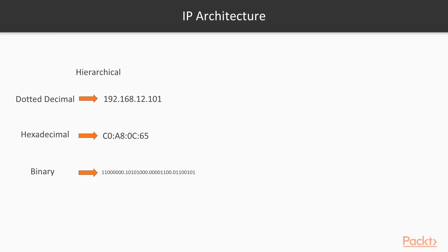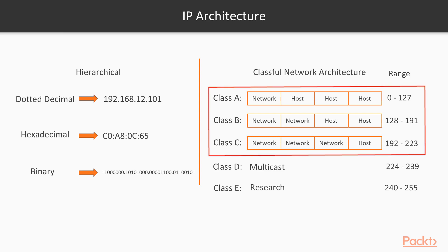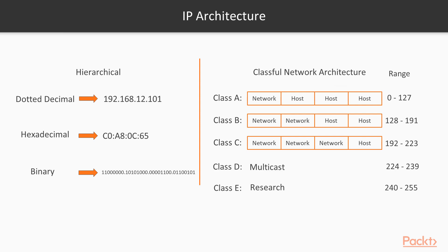Network addressing is how we divide and identify networks. The first system is the classful system — how we used to break up networks historically. The classful addressing system was decommissioned in 1993 in favor of the classless system. However, understanding classful addressing is a simple progression to understanding classless addressing. In a classful system, the 32-bit address space is broken up into five classes, three of which — classes A through C — are used for routing data. In each class, the four octets are broken up to accommodate a certain number of networks and hosts depending on the required scale.